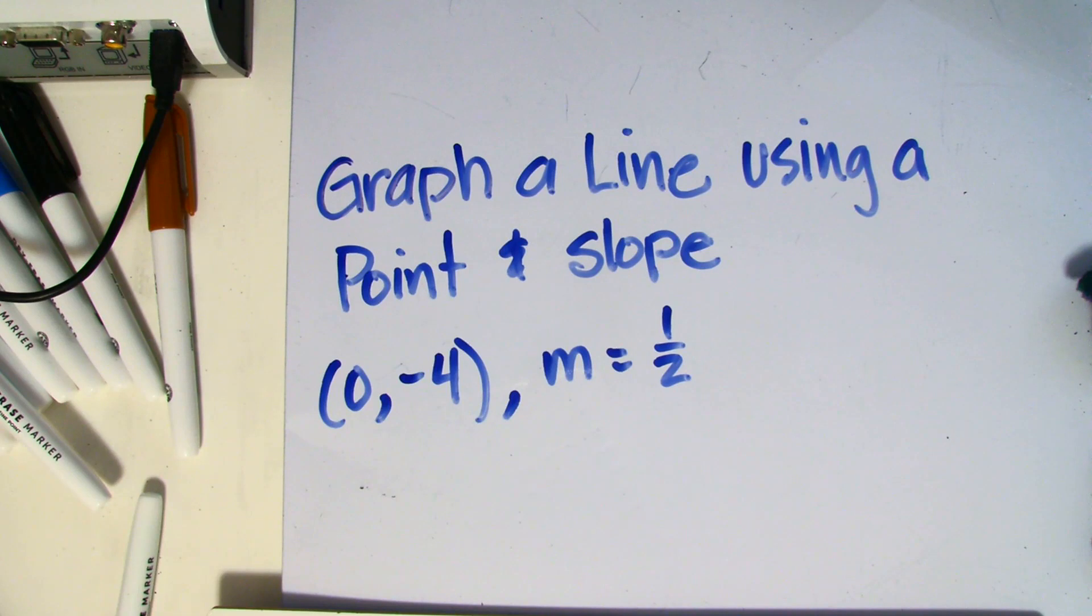Now let's say we want to graph a line and we only have one point, but we do know what the slope of that line is going to be.